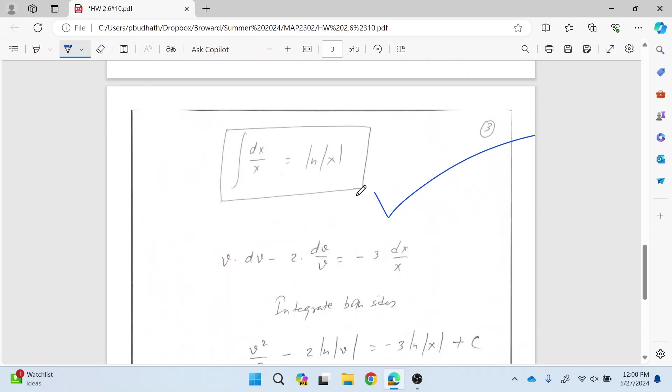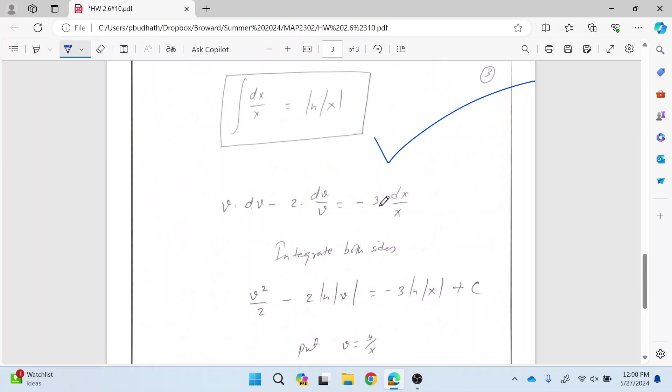So using this formula, now we can integrate this equation. Integration of v is v square over 2. Integration of this one is ln of absolute value of v by using this formula. By doing the same thing on the right side, we're going to get negative 3 times ln of absolute value of x.